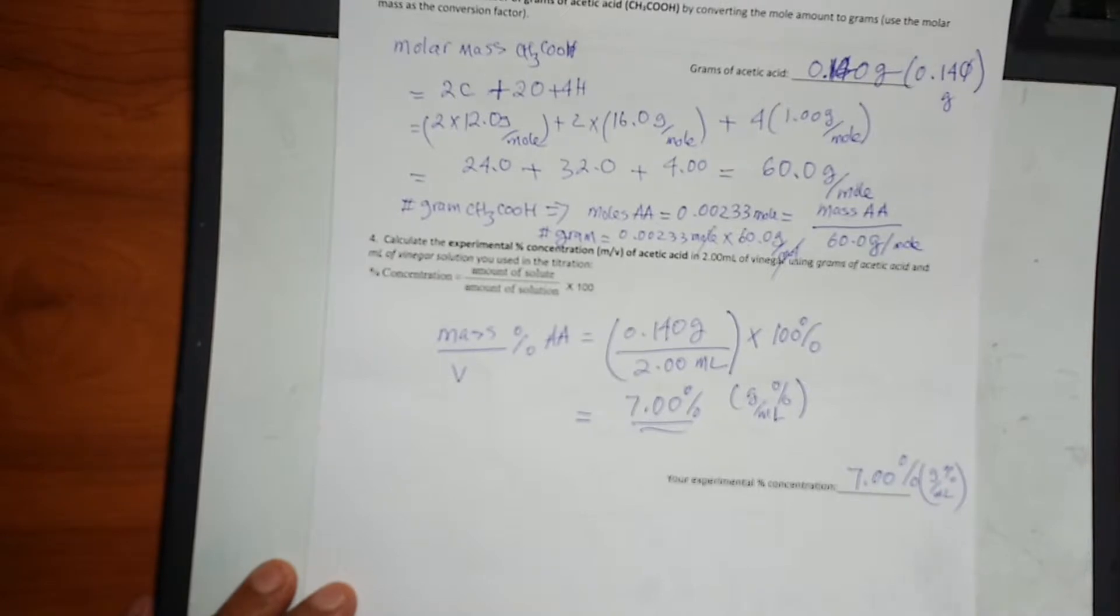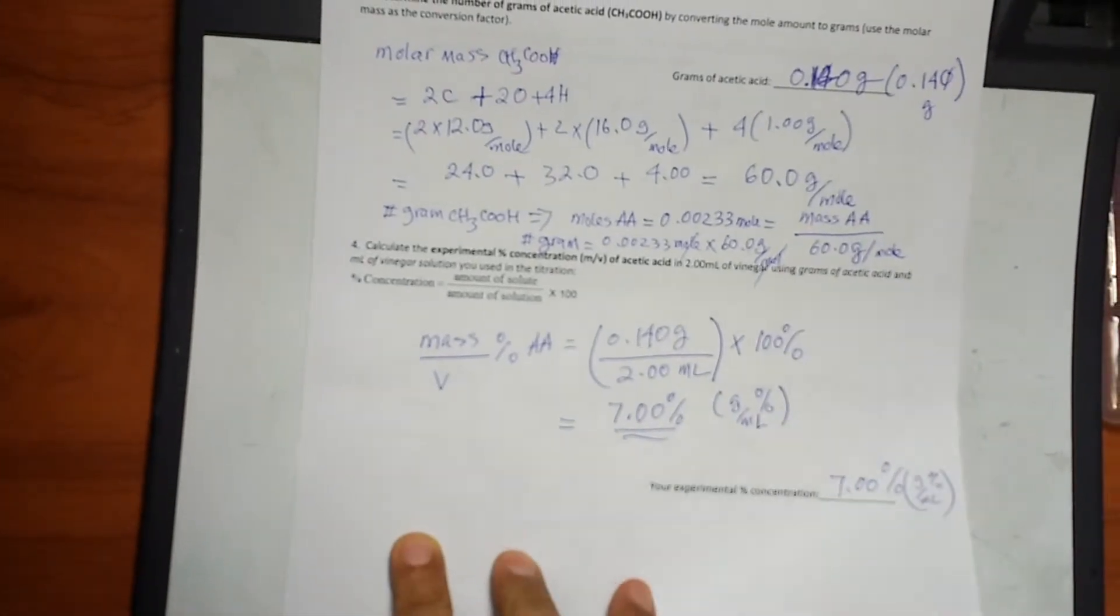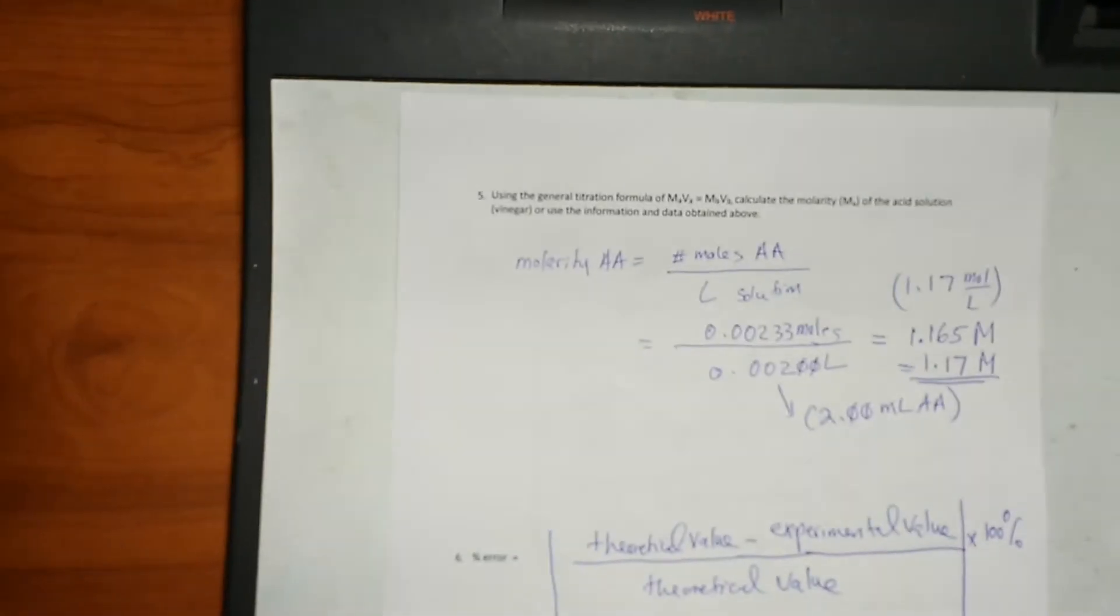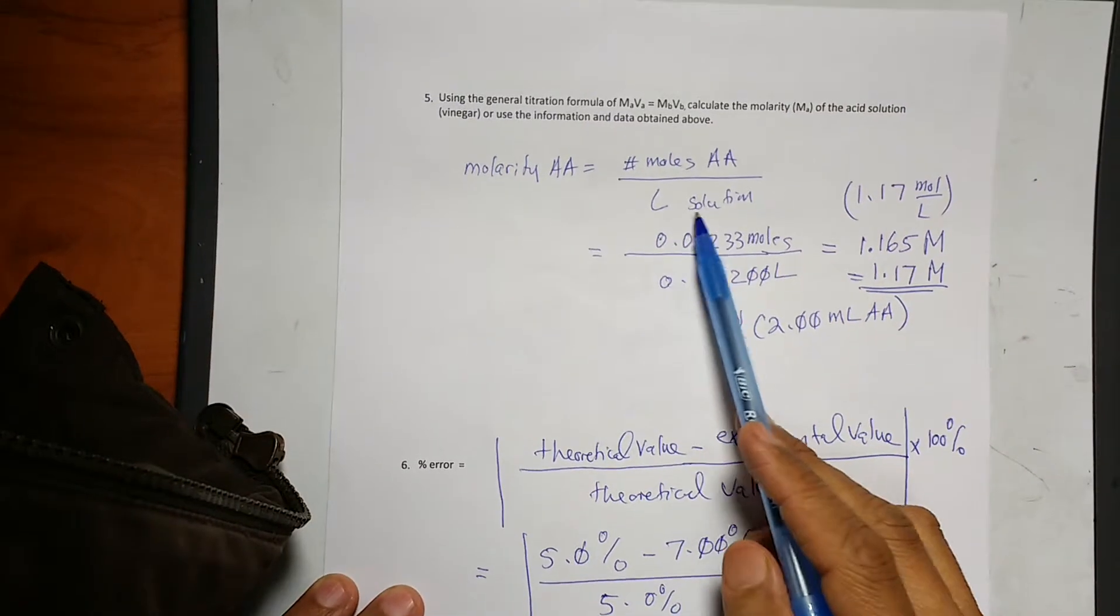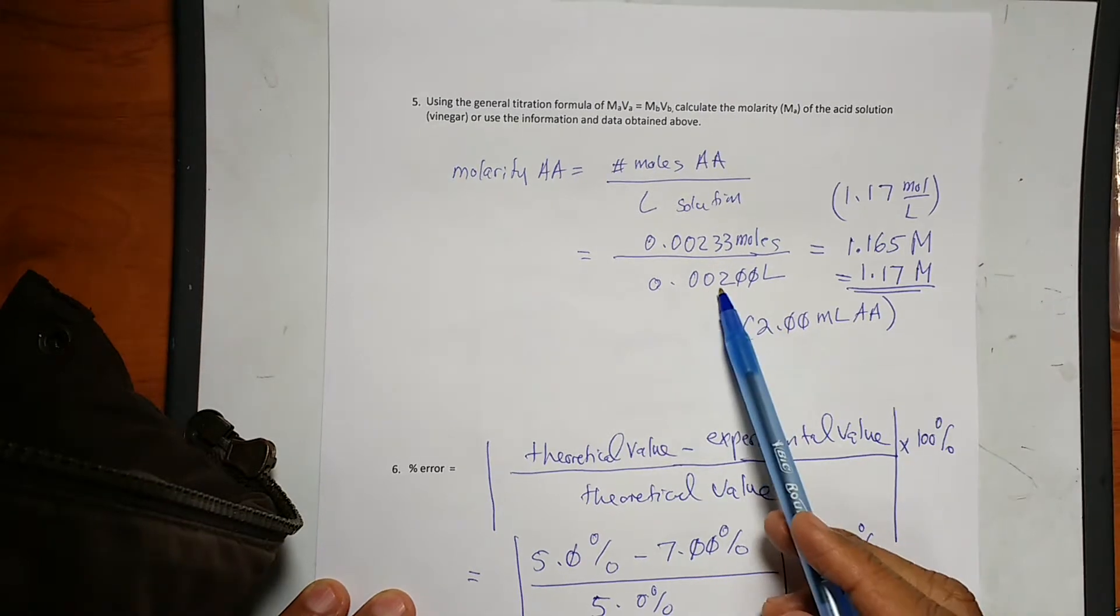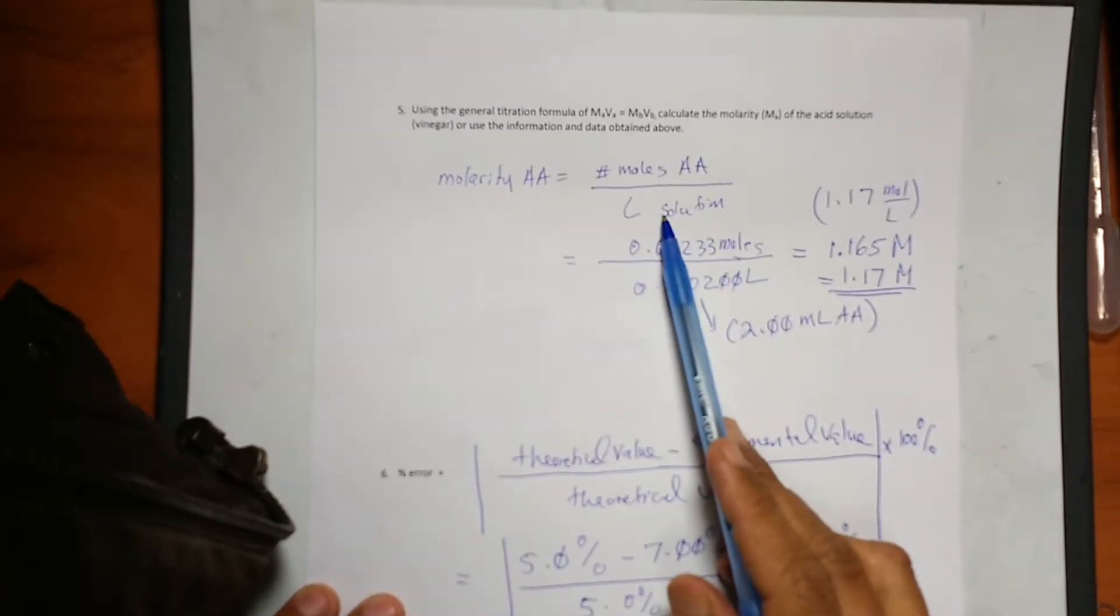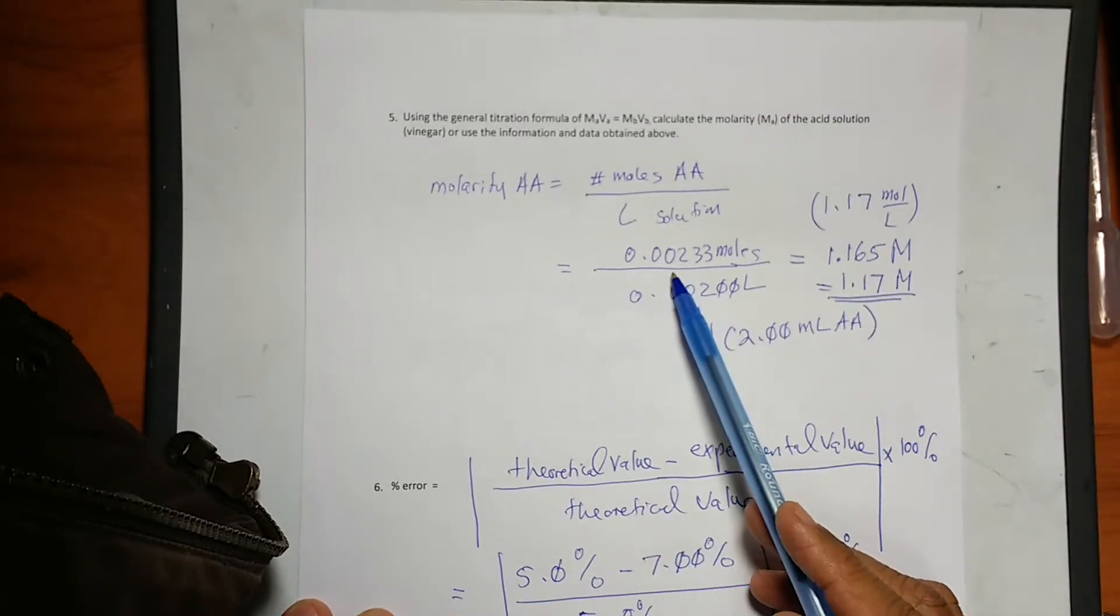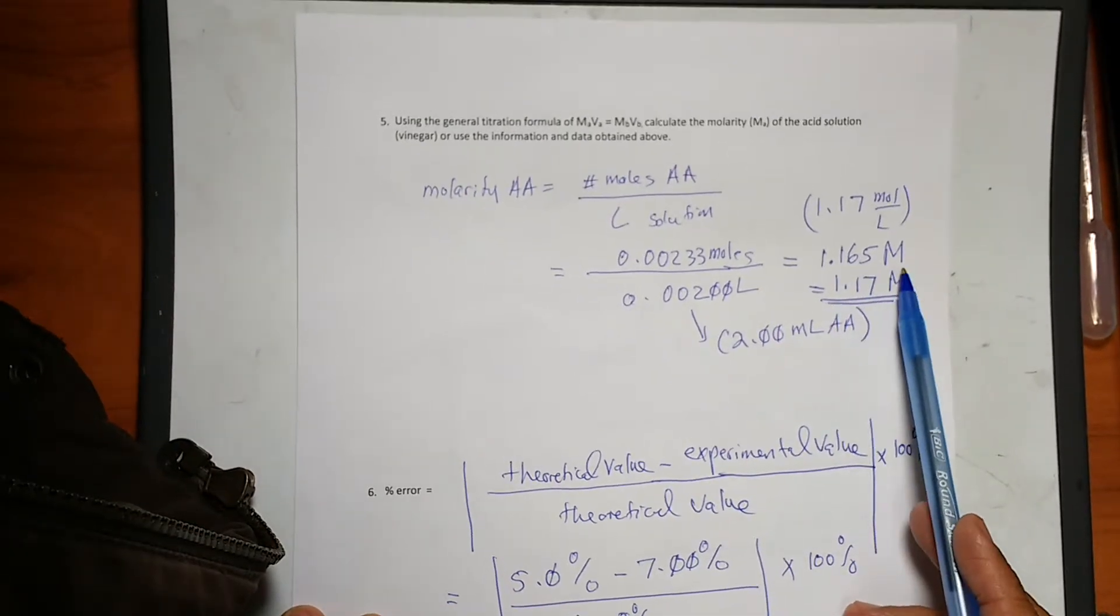Now we have to look at the molarity of acetic acid. The molarity of acetic acid will be moles of acetic acid divided by the liter of the solution. So we use 2 mLs of the solution, this is 0.002 liters converted into liters. And then the moles of sodium hydroxide from the previous one is 0.00233 moles, and it came up to be 1.165 molar.